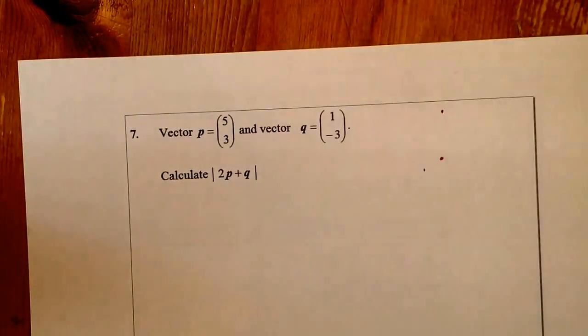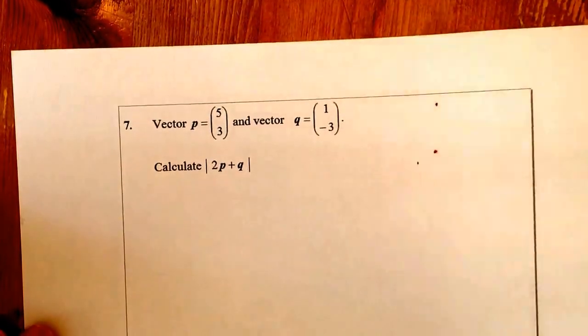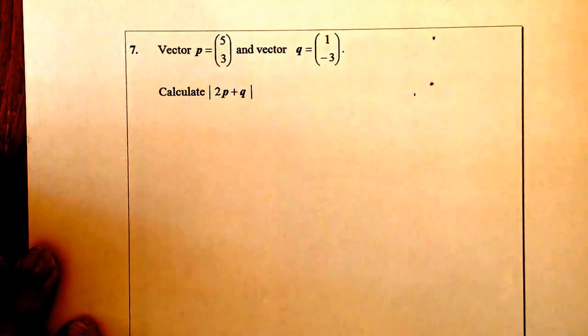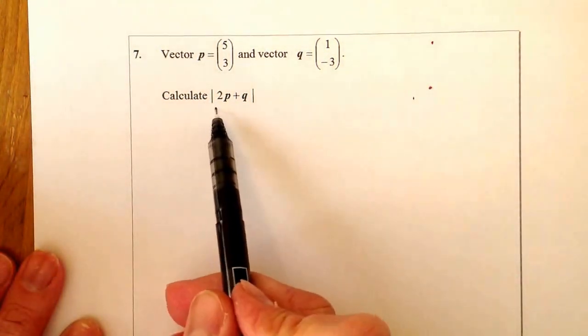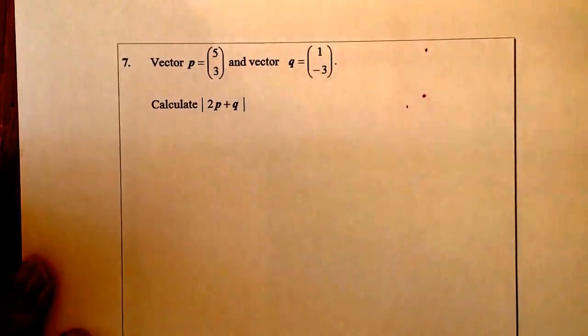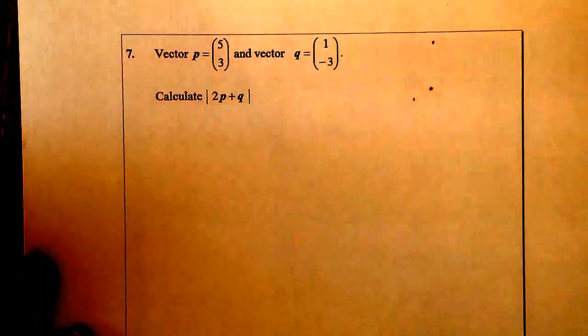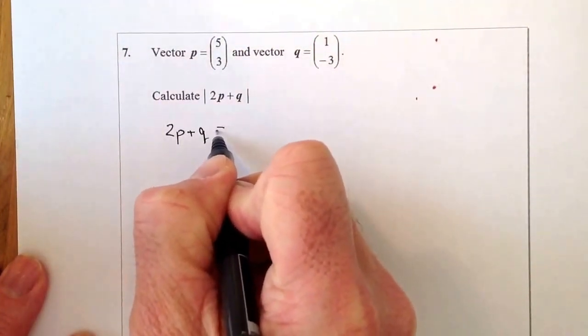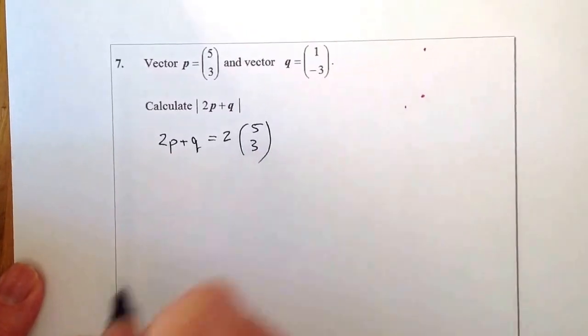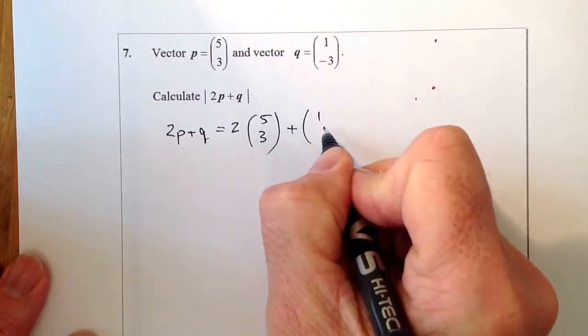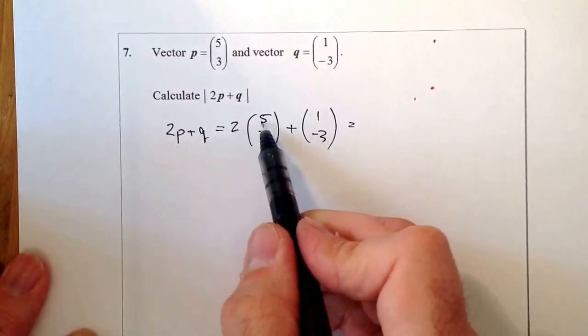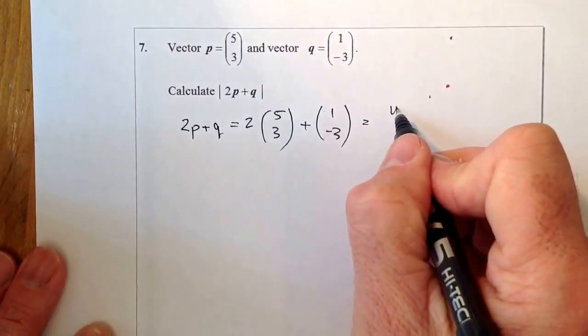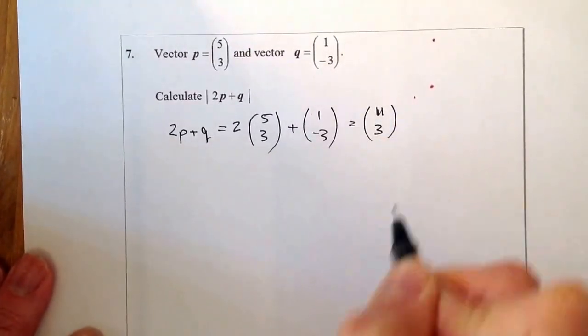Okay, so on to the last vectors question. Right, vector p, 5, 3. And vector q, 1, minus 3. And what we've got to do is calculate 2p plus q. And that's the magnitude when I see the lines like that. The size of the magnitude of it. Right, let's go ahead and work out what the vector 2p plus q is first of all. So I'll go for 2p plus q. It's going to be equal to, and it's going to be 2 times the vector p and it's going to be plus the vector q. What I'll do is I'll just add them, multiply these out, and add this one on. So that's going to be 10, that's going to be 11 on the top there. That's going to be 6, 6 minus 3. So it's 11. 6 minus 3 is going to give me 3. So that's that there.